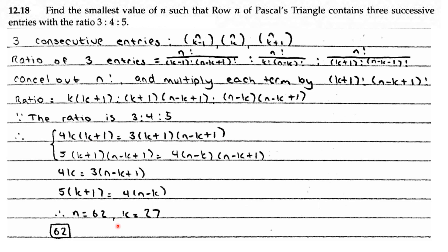Solving gives n equals 62 and k equals 27. So the row number, which is n, is 62.